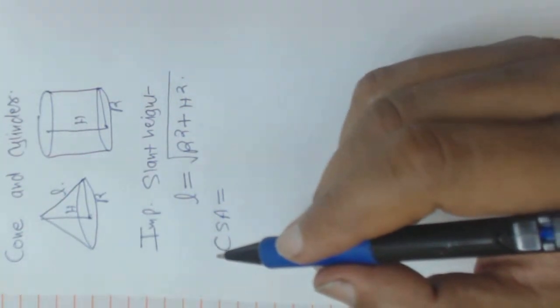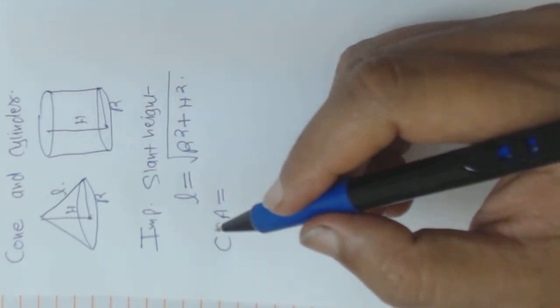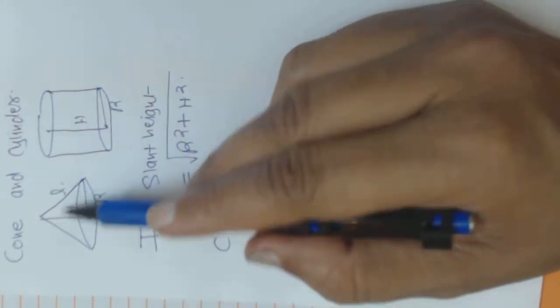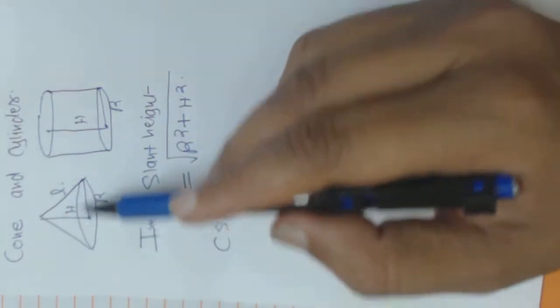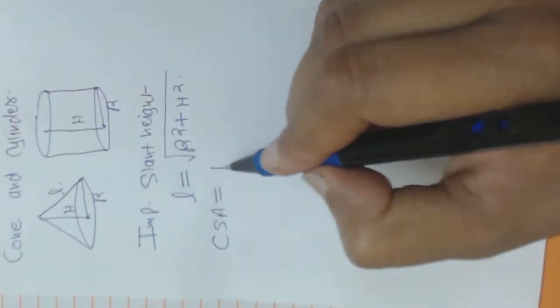Sometimes we have to find out the CSA of a cone and many times we have to find out the area of the tent which is conical in shape. So any tent which is conical in shape, we need the slant height to find its area. So CSA is the area of outer side of the tent.